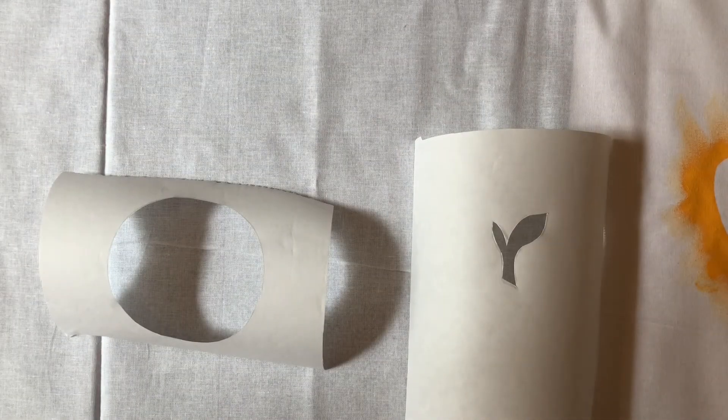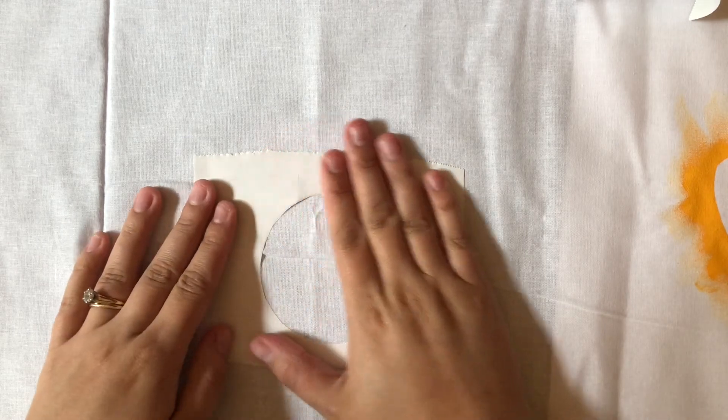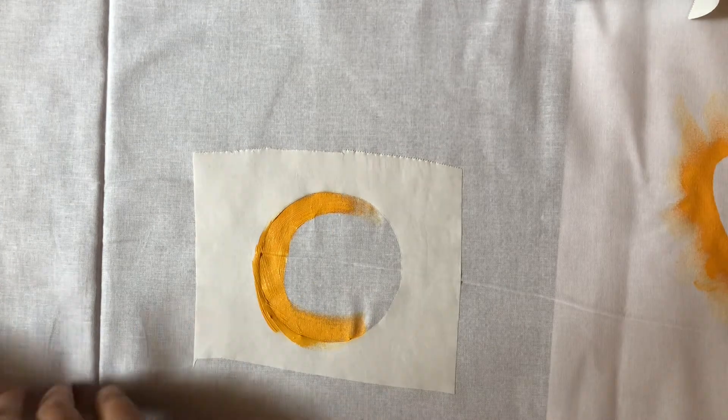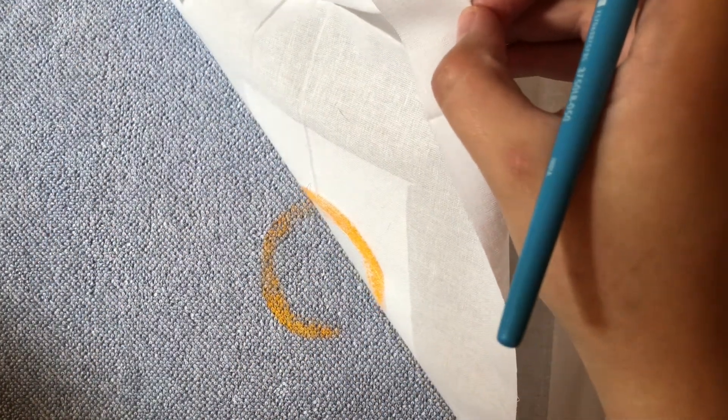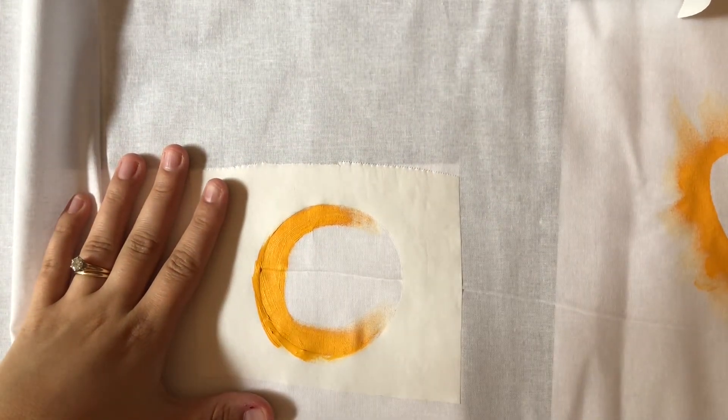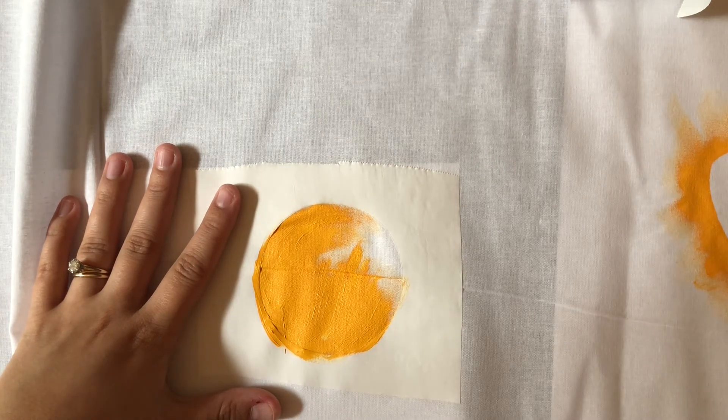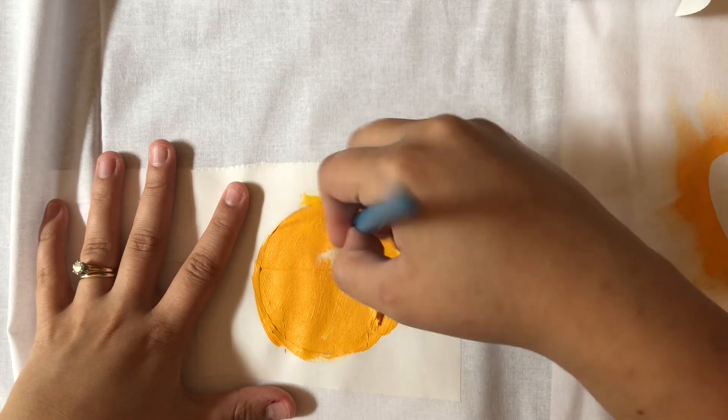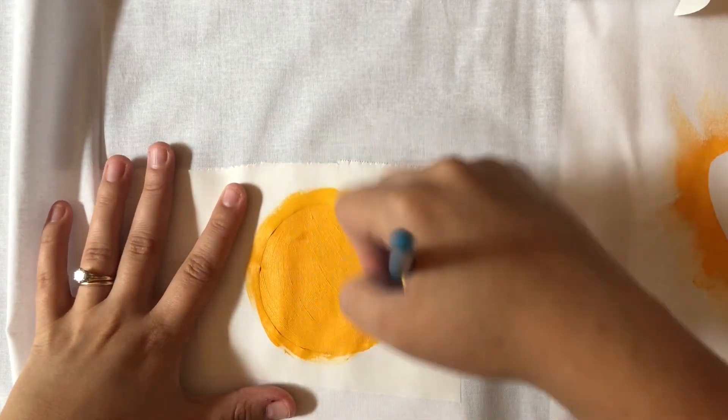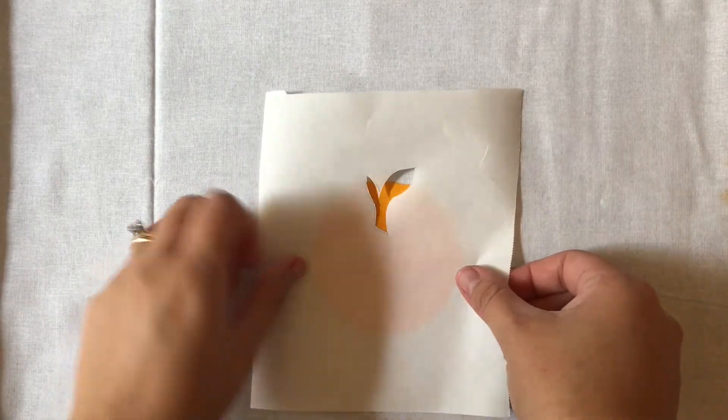All right, the other kind of alternative design we can do is actually a two color design. So we're going to start with whatever shape we want to be on the bottom. We'll paint this shape in first and then we'll let it completely dry. So once our first layer of design is completely dry we're going to take our second stencil and line it up where we want it.